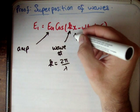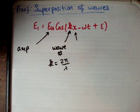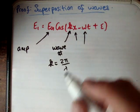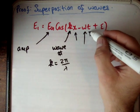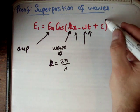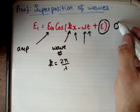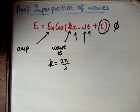X is also a vector — it's the displacement or position of your electromagnetic wave. Omega is your angular frequency, t is time, and finally we have this component epsilon, sometimes written as phi. This is your phase shift.